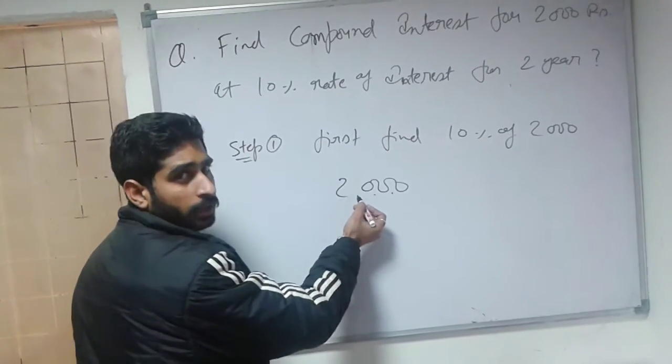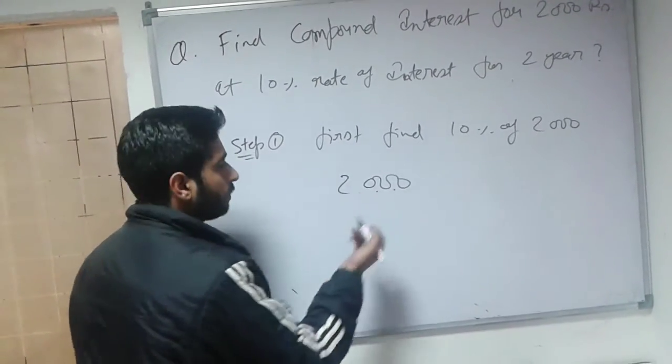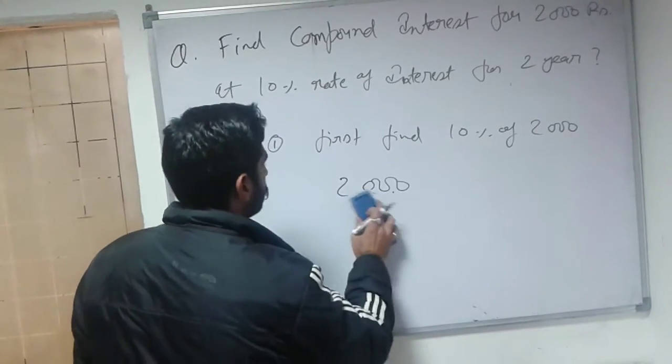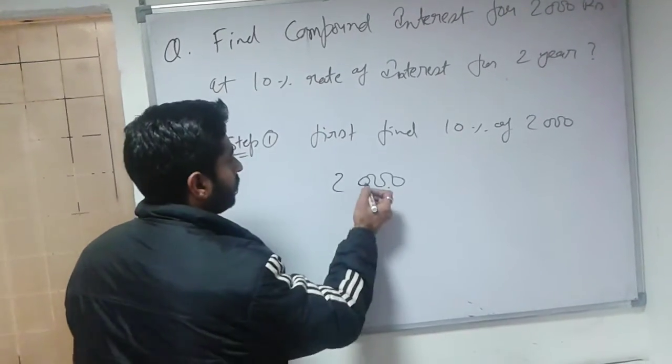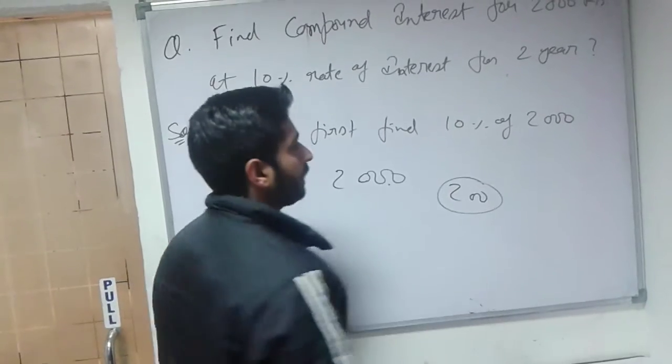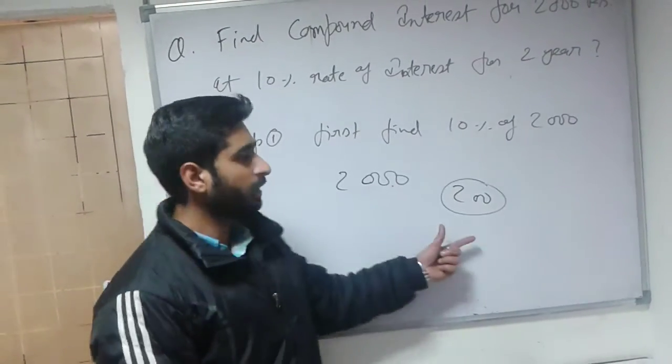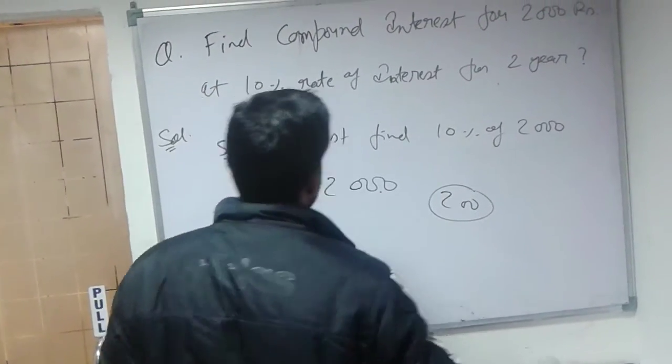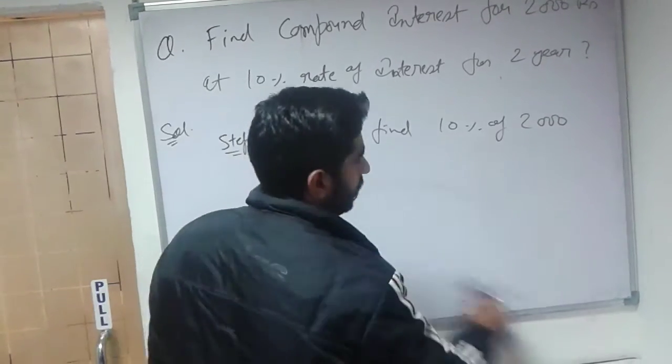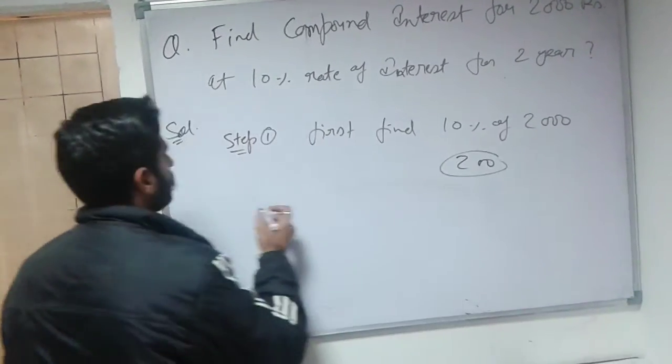for 1% make a dot here, for 0.1%. We are finding 10%, so make a dot here. The value is 200. So 10% of 2000 is directly 200. Now step 2, I write here 200 is 10% of this.